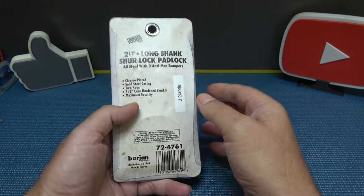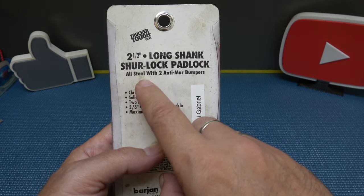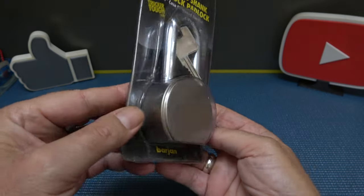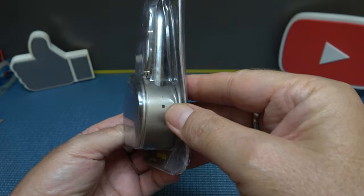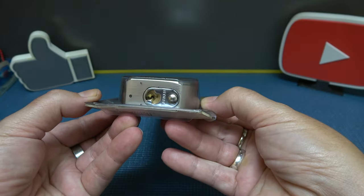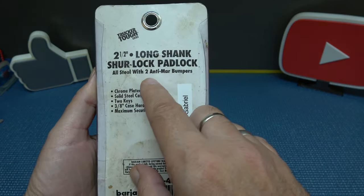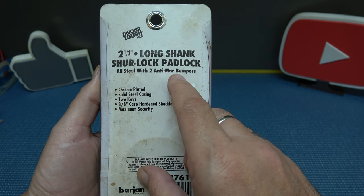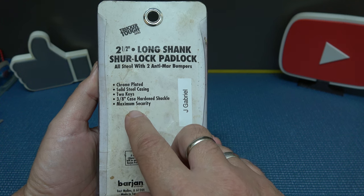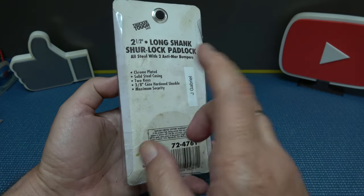Something I found odd on the back - it says 'Sherlock padlock, all steel with two anti-mar bumpers.' I don't see any anti-mar bumpers, so I don't know what that means. Chrome plated solid steel casing, two keys, three-eighths inch shackle, maximum security.